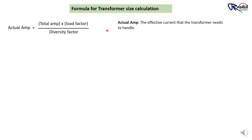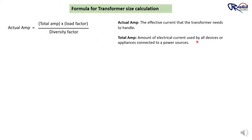Actual Ampere is the effective current that the transformer needs to handle. It reflects the current the transformer will actually carry under normal operating conditions, considering both the load and how many devices are operating at the same time. Total Ampere is the amount of electrical current used by all devices or appliances connected to a power source — it tells how much electricity is being consumed.